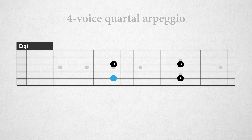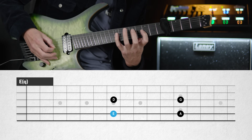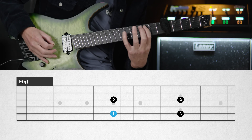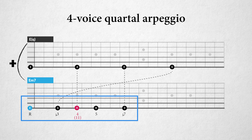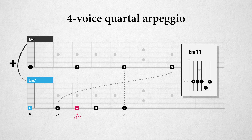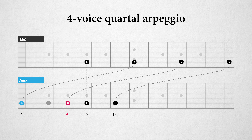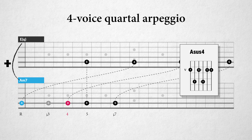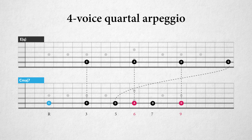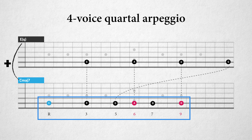The basic 4-voice arpeggio looks like this. The beautiful thing is that it can be played over more than one chord. Over an E minor 7 chord we get an E minor 11 sound: E, G, B, G, and A. Over an A minor 7 chord we can create an A minor 7 sus 4 sound: A, D, E, and G. And over a C minor 7 chord we can create a C 6-9 sound: C, E, G, A, and D.